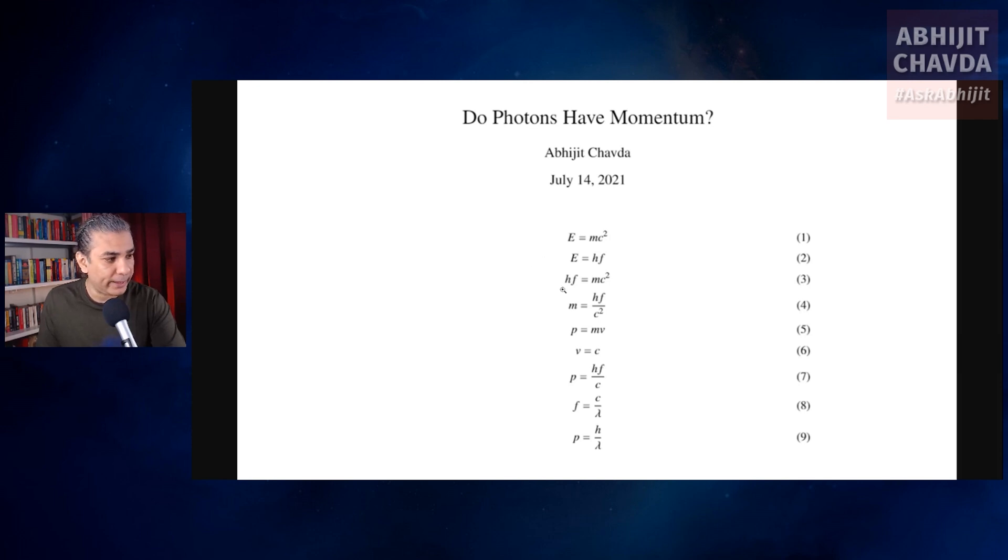Now we know that hf equals mc squared by combining these two equations, equations one and two. So we get this relationship, hf equals mc squared.